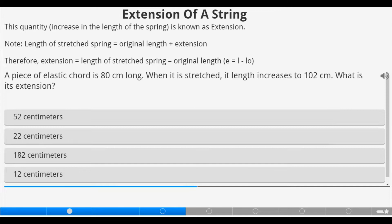Now, extension of a spring. This quantity increasing the length of the spring is known as extension. We should note that length of stretched spring equals the original length plus extension. Therefore, extension in the spring will be equal to the length of stretched spring minus the original length. Extension is represented with small e, length of stretched spring is l, while original length is l naught. Now let's deal with this question.